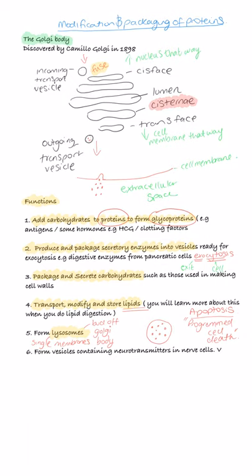They can also form vesicles containing neurotransmitters, for instance, in nerve cells. So you probably learned at GCSE that if we imagine a nerve cell with its axon,